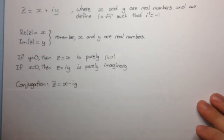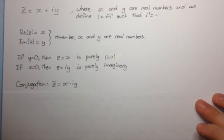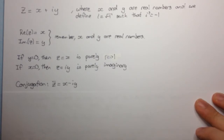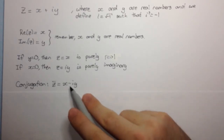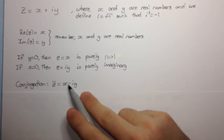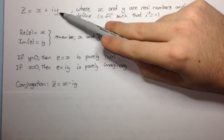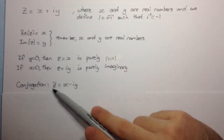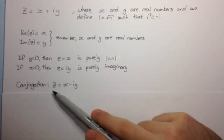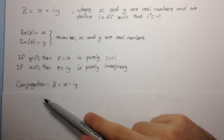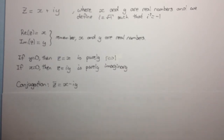The next thing we look at is what is known as conjugation, or finding the conjugate of a complex number. You might remember when you were asked to rationalize a fraction which had a surd in the denominator — we multiplied by the conjugate. The conjugate is just changing the sign in between the real and the imaginary parts. So if z is x plus iy, then the conjugate, which we write as z with a bar on top — z bar — is equal to x minus iy.